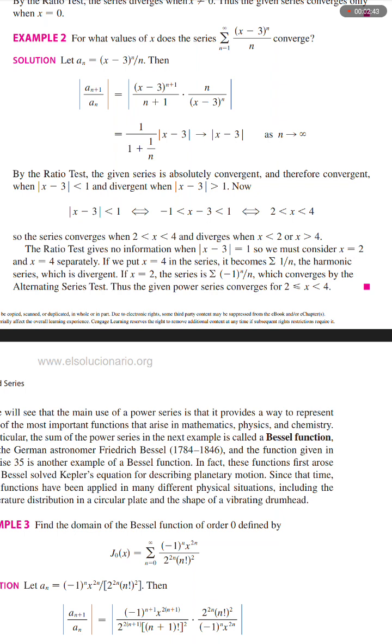If we put x = 4 in the series, it becomes the sum of 1/n, the harmonic series, which is divergent.